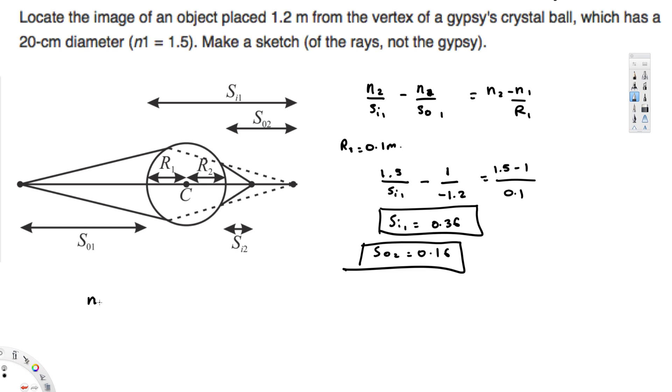Now for the second surface, the equation is going to look like this. Since this is a curved surface: n₁/sᵢ₂ minus n₂/sₒ₂ is equal to (n₁ minus n₂)/r₂. Now our purpose is to find sᵢ₂. We have n₁, that's the refractive index of air, n₂ is the refractive index of the ball, and sₒ₂ we calculated, that's 0.16, and r₂ is basically 0.1, right?